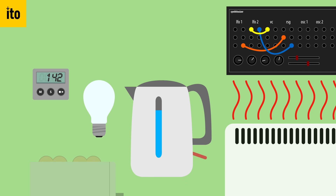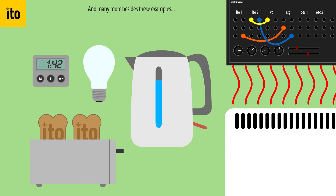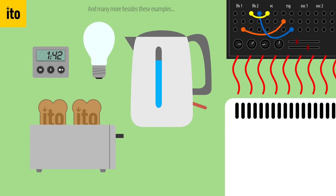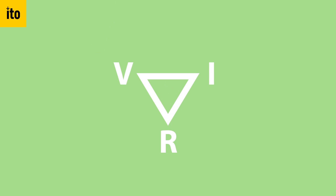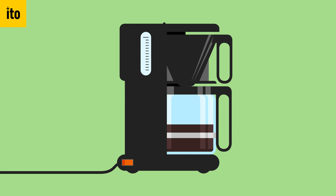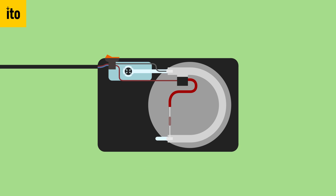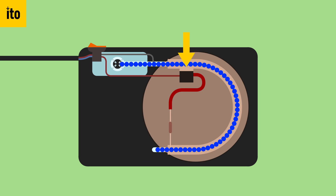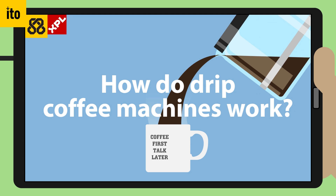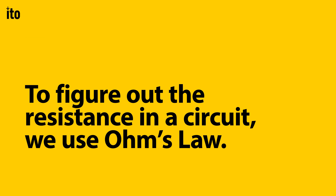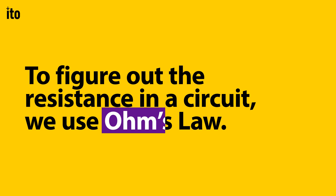In general, many devices use resistance to their advantage, striking the perfect balance between voltage, amperage, and resistance. Coffee machines, for instance, cleverly use a single heating element to heat both the water and the hot plate. And of course we made a video about drip coffee machines. To figure out the resistance in a circuit, we use Ohm's law.